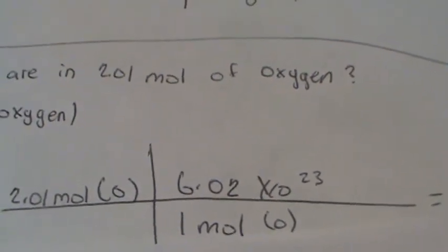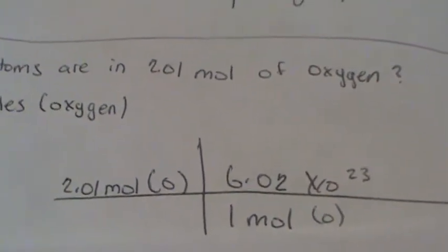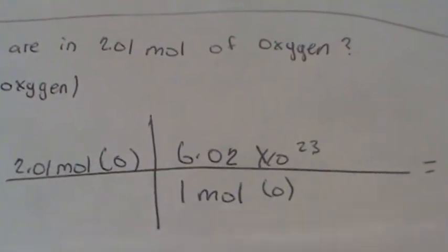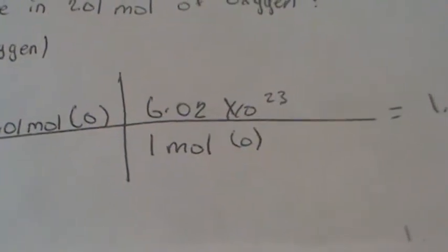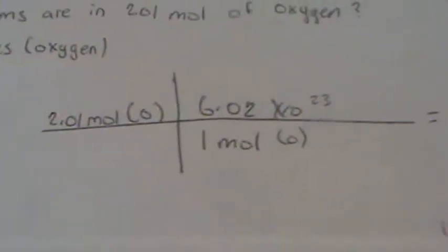Which equals one unit of measurement. Since we're only trying to look for one, we put our Avogadro's number. At the bottom, it goes one mole. Since both equal each other, we put it in that way.